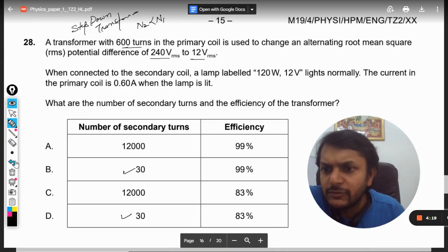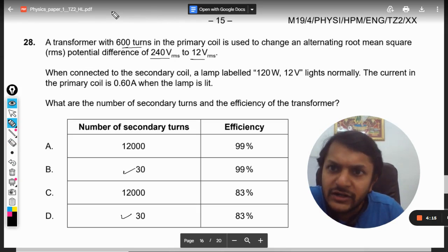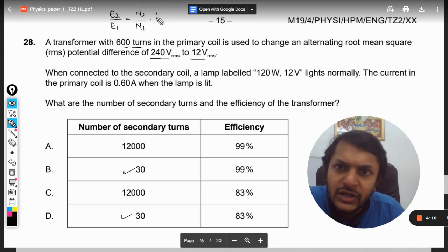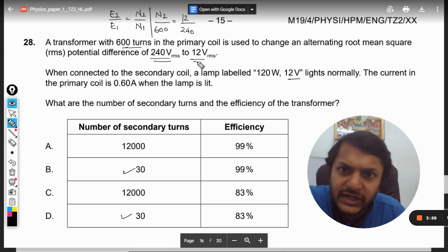Now, what is the mathematics behind it? I will tell you. See, there is only one formula here: e2 divided by e1 is equal to n2 divided by n1. So n2 we need to find, and n1 is 600. E2, this secondary, is 12 volts and the primary is 240.